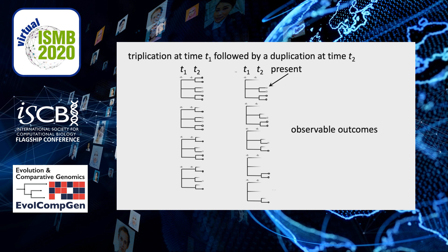We summarize this in the following type of diagram, where the triplication is at T1, the duplication is at T2, and the observations of the genes surviving fractionation are at the present time. These are all the trajectories.